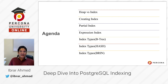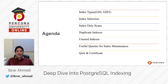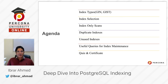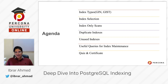We will study how to create an index, how to create partial and expression indexes. We will also discuss different types of indexes in PostgreSQL like B-tree, hash, BRIN, GIN, and GiST, and where each can be used. We will discuss performance features like index only scans, and interesting queries to find duplicate indexes and unused indexes in PostgreSQL.